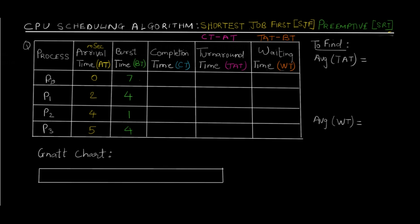Let's start with process P0. At time T=0, P0 arrives in the queue. Since no other process has arrived yet, the processor directly starts processing P0. This is time 0, and we know P0 requires 7 milliseconds. When 2 milliseconds have passed, at time 2, process P1 also comes into the queue.